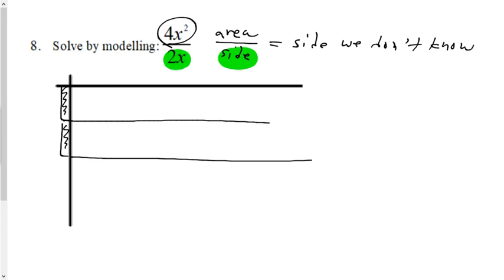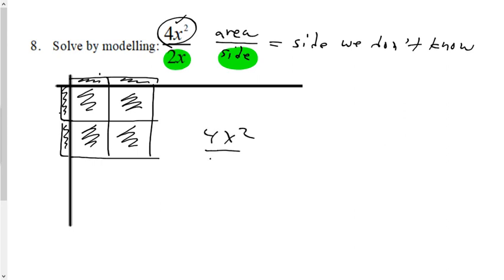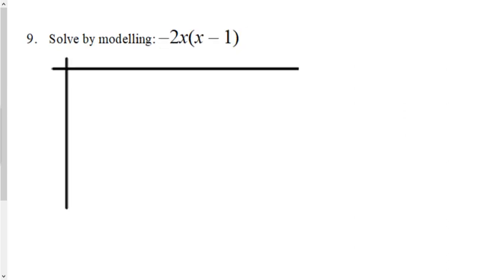I draw two lines across for the side length, giving the area a blank template to fit what I need. For 4x squared, I come straight down and shade it in: that's 1x squared, 2x squared, another x squared, another x squared — now I have my 4x squared. The missing top side will be a positive x and a positive x, because positive times positive is positive. Therefore, 4x squared divided by 2x equals 2x.